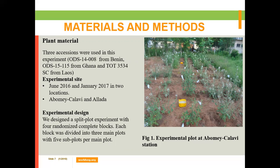To attend our objectives, we used three accessions from three different countries. One accession was from Laos in Asia, and two accessions were from West Africa — Benin and Ghana. We used two experimental sites for this work: one at the University of Abomey-Calavi and another in the Allada district. The experimental design used was a split-plot experiment with four randomized complete blocks, each divided into treatment plots with five subplots per main plot.